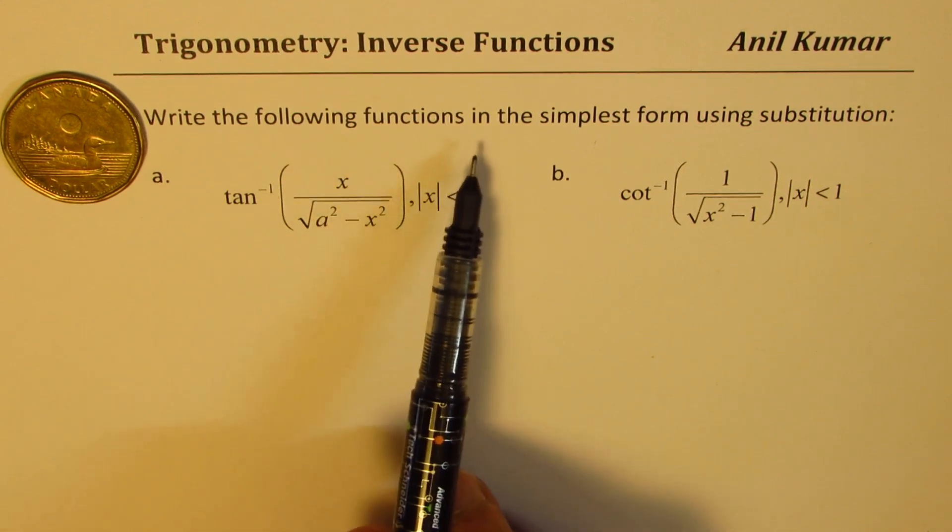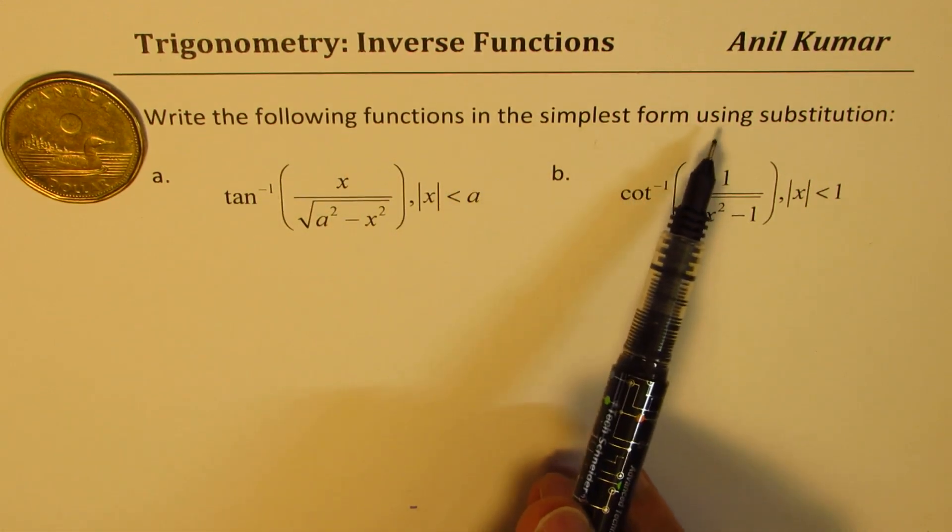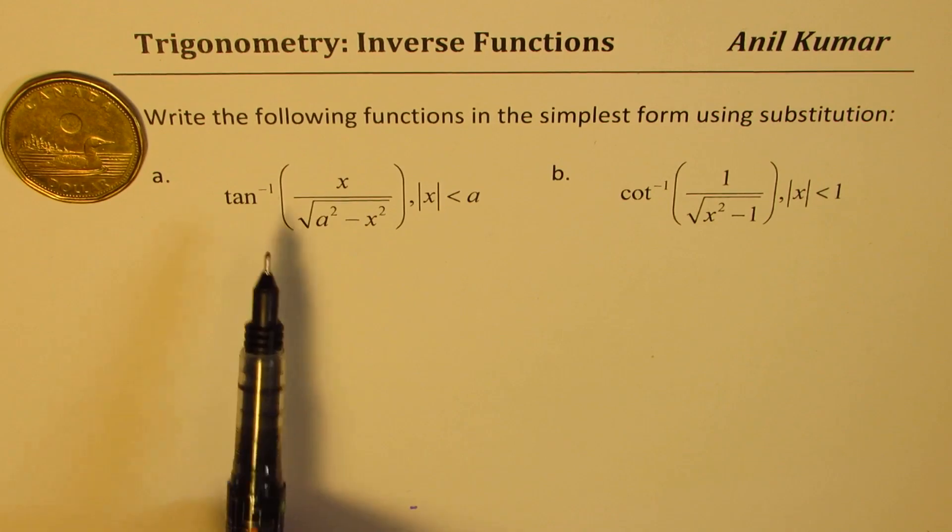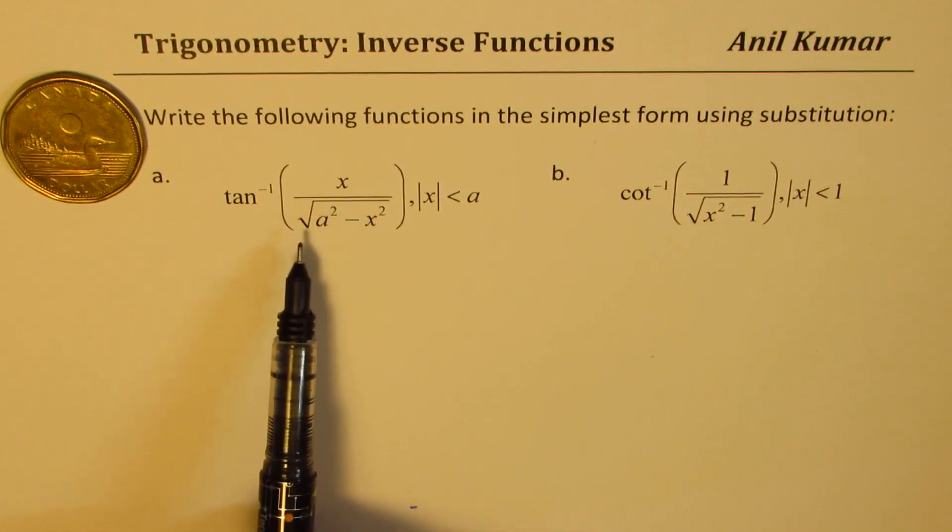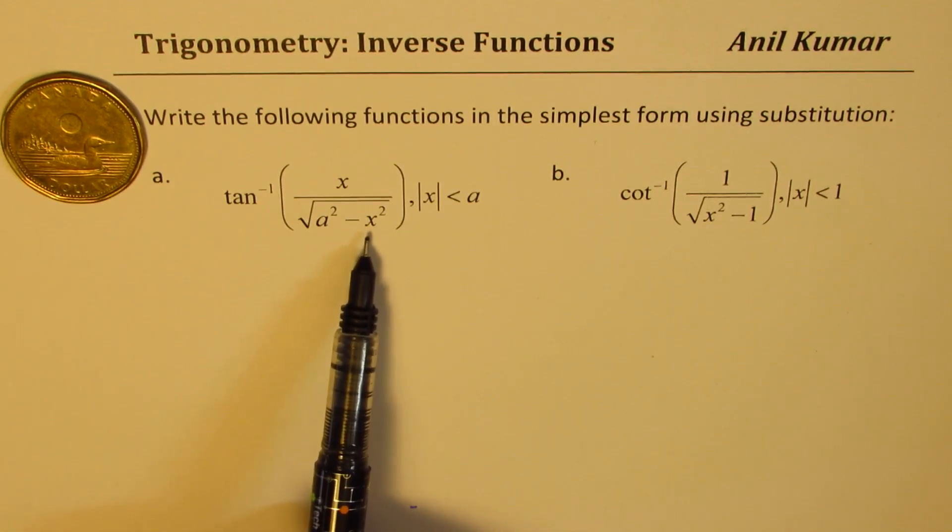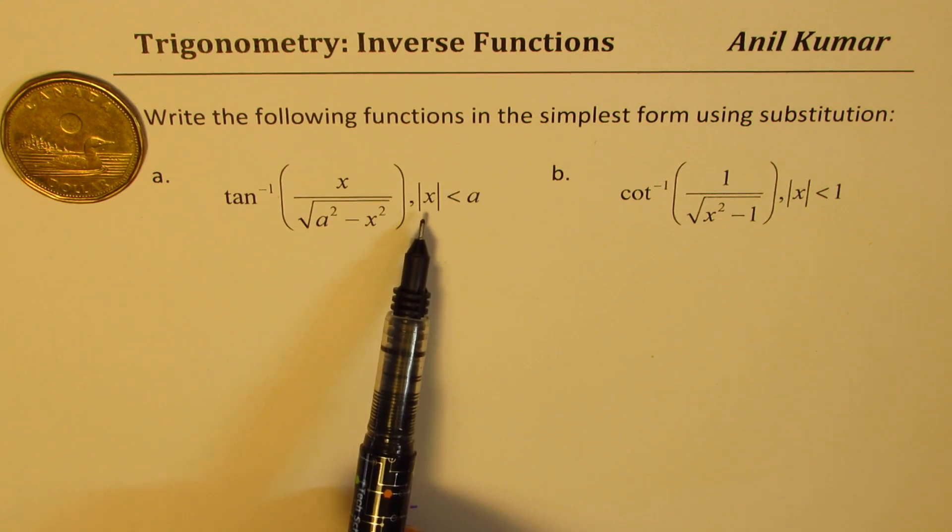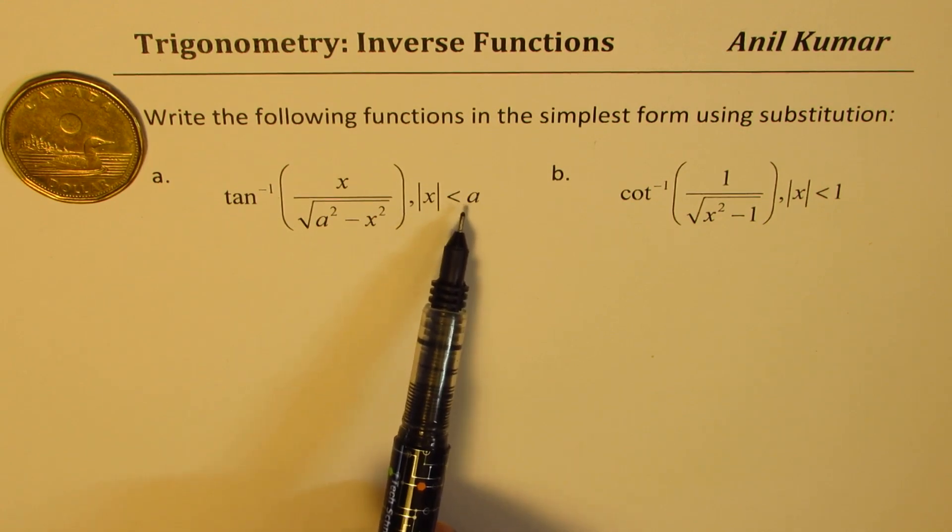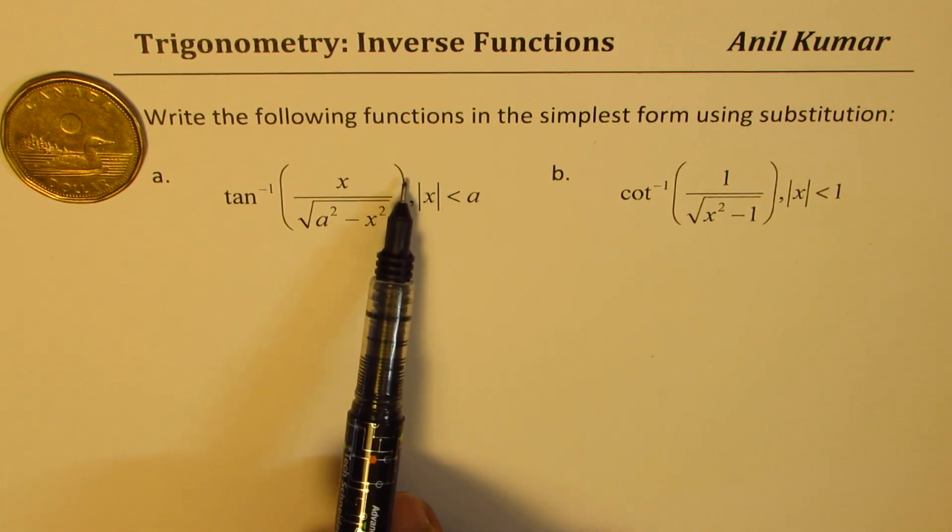Write the following functions in the simplest form using substitution. We have tan inverse of x over square root a square minus x square, where absolute value of x is less than a. That means x is between minus a and plus a.